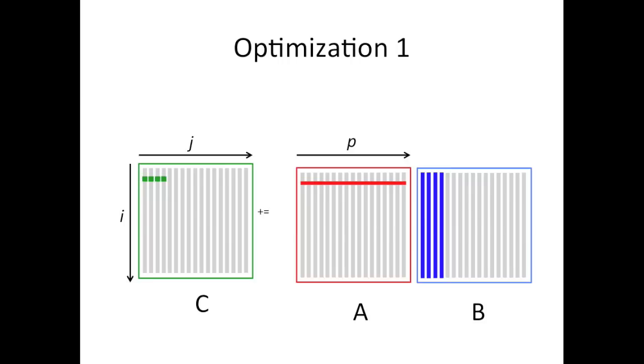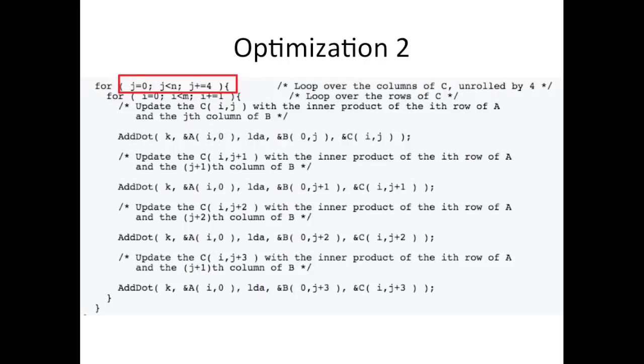etc. And what you notice is that the same four columns of B are being reused as we do this. The way you do that is you step through the J loop in steps of four. That gives you four columns of C at a time.